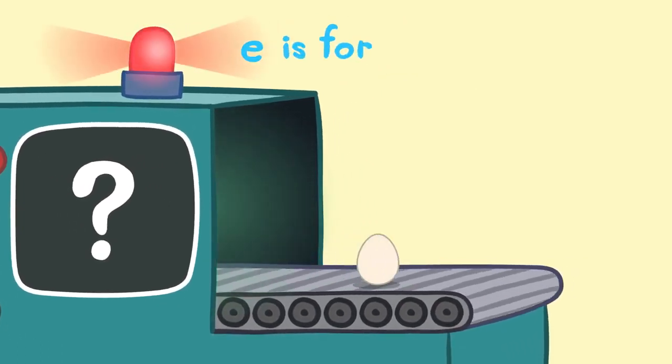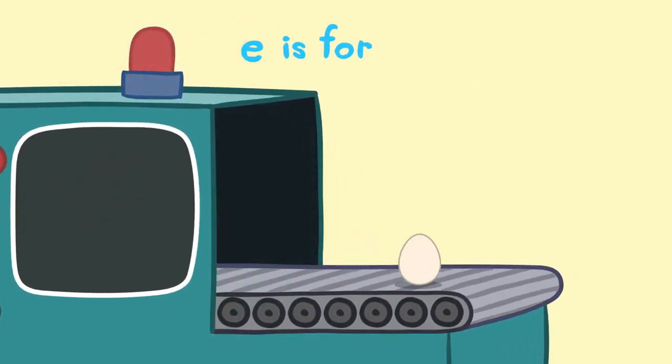E is for... Brilliant! E is for egg. You can fry eggs, boil or scramble them.